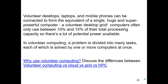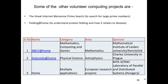An important point is that volunteer computing is often confused with cloud computing, grid computing, and HPC. It is important to know the differences between these terminologies. Some key volunteer computing projects include ABC@home, used for mathematical computations by the University of Kaiserslautern; Asteroids@home, a physical science and astrophysics project from Charles University in Prague; and multiple European research projects.